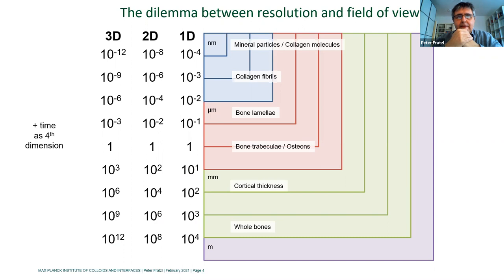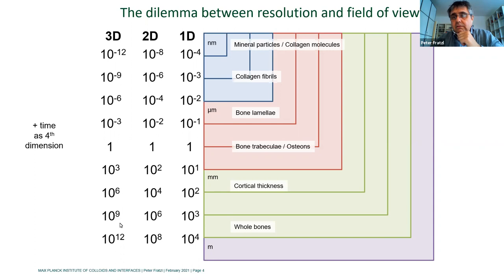Regarding resolution: no matter how good we make beam lines, they cannot serve everything. The mineral particles and collagen molecules are at the nanometer scale, fibrils at the hundred-nanometer scale, bone lamellae at a few microns, trabeculae and osteons at the hundred-micron scale, cortex thickness at the millimeter scale, and whole bone at the centimeter-to-decimeter scale. In 1D this spans eight orders of magnitude; in 3D it becomes 24 orders of magnitude — more than the number of molecules in a liter of gas. Nobody wants to deal with that many voxels.